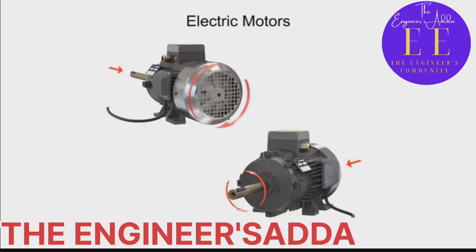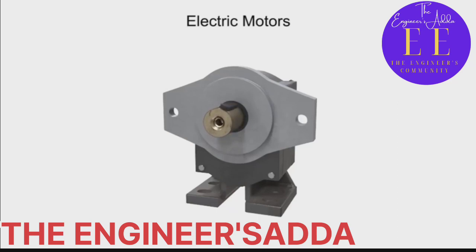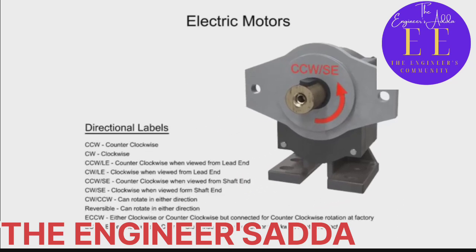In general, for most electric motors, rotation is specified as clockwise or counterclockwise when viewed from the opposite end of the shaft. This is sometimes called the lead end, since the electrical wires or leads typically connect on this end. By contrast, the rotational direction for hydraulic pumps is specified as clockwise or counterclockwise rotation when viewed from the shaft end. Manufacturers use different descriptions to label both motors and pumps, and some standard labeling conventions are shown here. If a motor or pump is not labeled on the frame, consult the manufacturer for specifications.